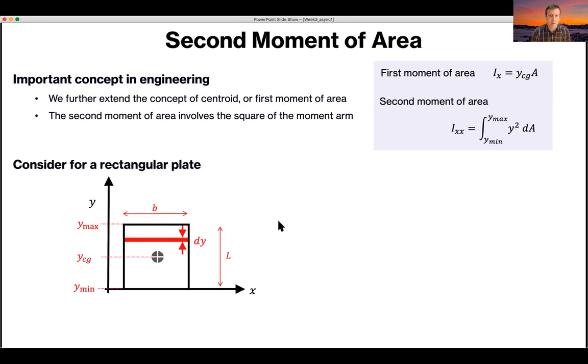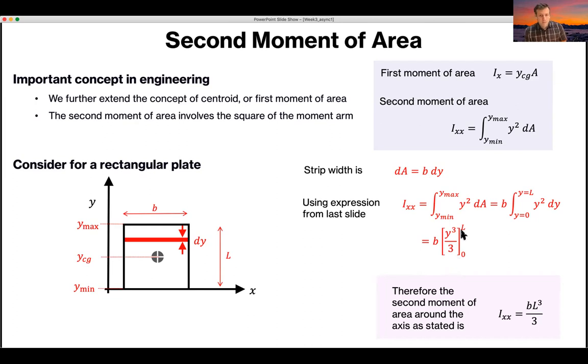So computing this now for the second moment of area, which has the notation usually Ixx, we use the same idea that we break this area into the product of its width and its incremental height. And we apply this idea and we integrate between y is equal to 0 and y is equal to L of y squared. And this time, because it's y squared, you get y cubed over 3. And it's between, and the limit would be here. So, this integral simplifies because this is 0, so you just have B L cubed over 3. So the second moment of area around the x axis is the base times the length cubed divided by 3.